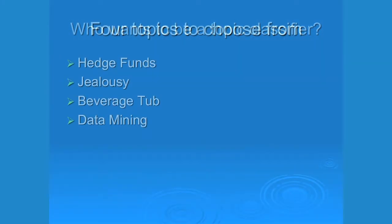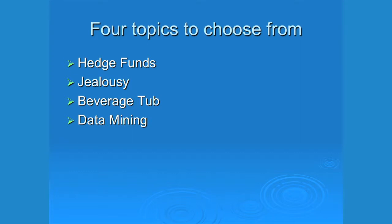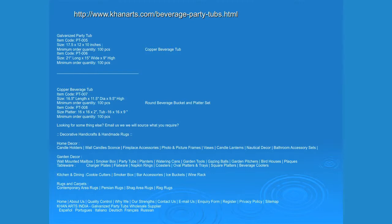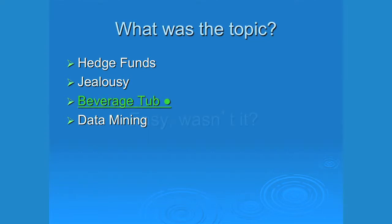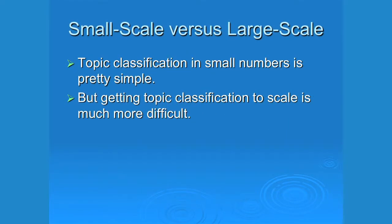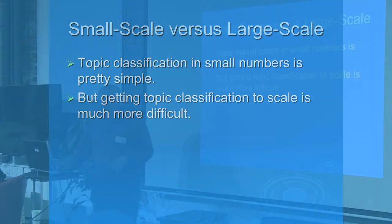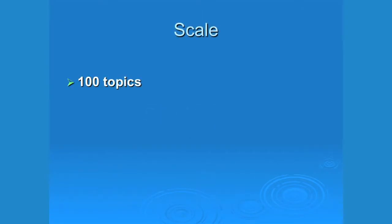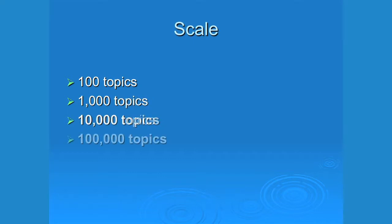What does it mean to classify something? Say you have four topics: hedge funds, jealousy, beverage tub, and data mining. Here's some data — it happens to be selling beverage tubs, so the right answer is 'beverage tub.' That's easy. But it gets a lot harder because size matters. Dealing with a small number of topics is not difficult — there are lots of techniques — but scaling is much more difficult.